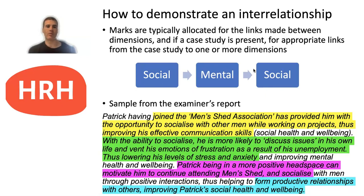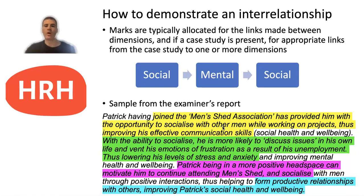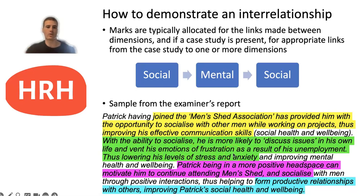Here is an example from the examiner's report with a high-scoring response, with marks highlighted in different colours. The response discusses Patrick joining the Men's Shed Association, which provided him an opportunity to socialise with other men while working on projects and improve his communication skills — that's a link from the case study to the social dimension, worth a mark. The student then linked the social dimension to the mental dimension: with that ability to socialise, he's more likely to discuss issues in his life, vent his emotions and frustrations from retirement, and lower his levels of stress and anxiety — a social to mental link.